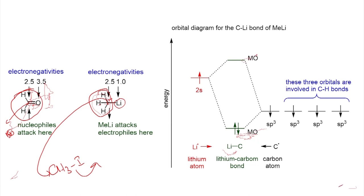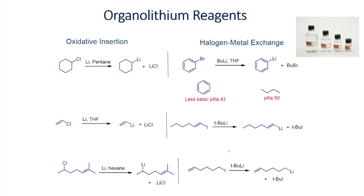Now let us see the preparation of organolithium reagents and their application for carbon-carbon bond formation. There are two methods shown here. The first involves the reaction of halo substrates with lithium metal to give the organolithium reagent, generating one equivalent of lithium salt as a byproduct. For example, you have to use two equivalents of lithium: one is converted into the cyclohexyl lithium reagent and the other into lithium chloride.